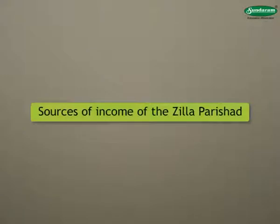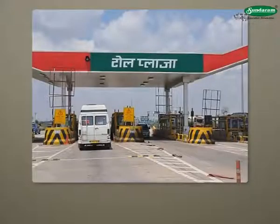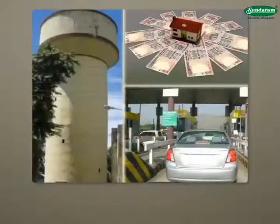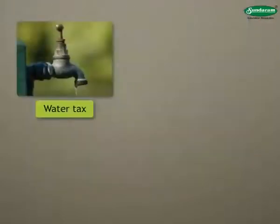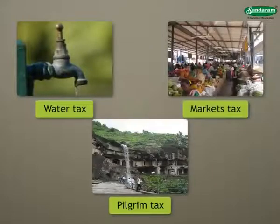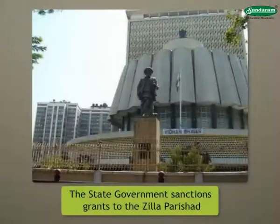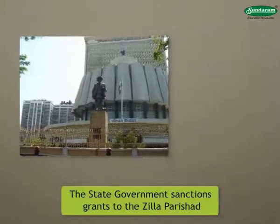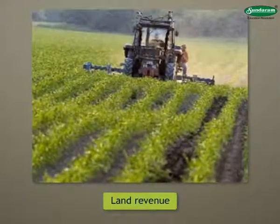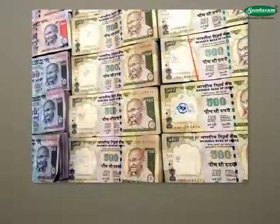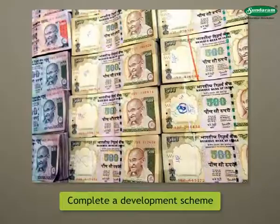Sources of income of the Zilla Parishad: The Zilla Parishad has to make financial provisions for its activities. Its main source of income is the revenue obtained through various taxes like taxes on water, markets, pilgrim tax, etc. The state government sanctions grants to the Zilla Parishad in proportion with the land revenue and also provides money to complete a development scheme assigned to it.